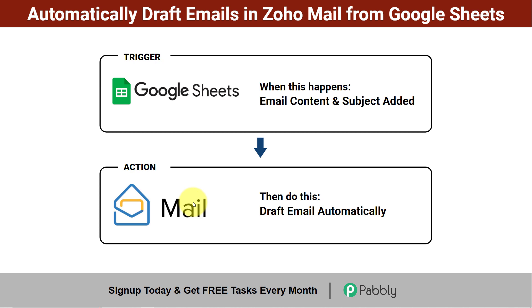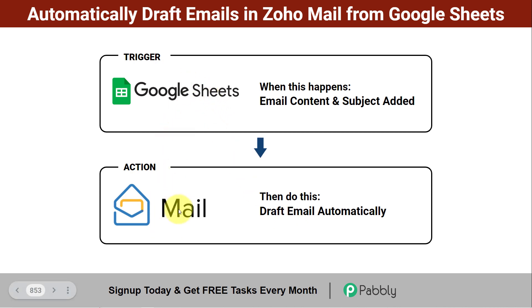After creating this automation you do not have to manually copy the email details and compose or draft emails one by one again and again. Simply create this automation with an automation software, add the details, and get your email drafted automatically into Zoho Mail.